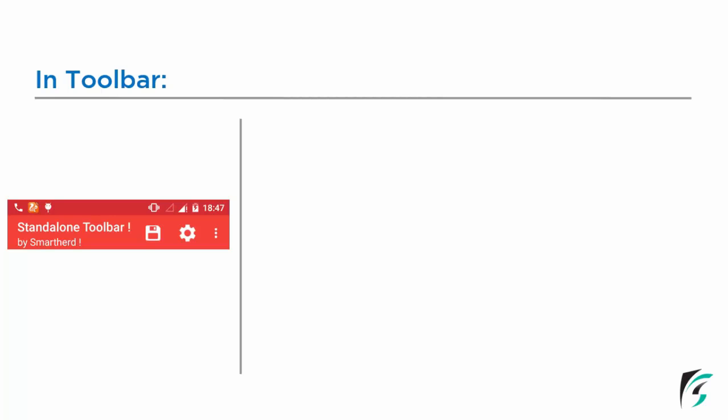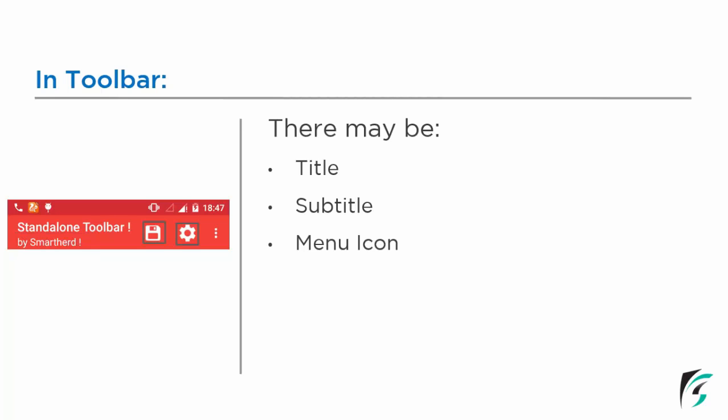The contents of the toolbar have predefined places. The toolbar may contain a title — on the left side in the image, we can see there is a title in the toolbar. There may be a subtitle in the toolbar, but it is not a compulsion to have the subtitle. There may be menu icons or there may not be a menu icon — there may be one, two or three as per the need. On the left side, we have two menu icons for save and settings. Instead of these two icons, we may have the refresh icon, the delete icon, the search icon, and many more.